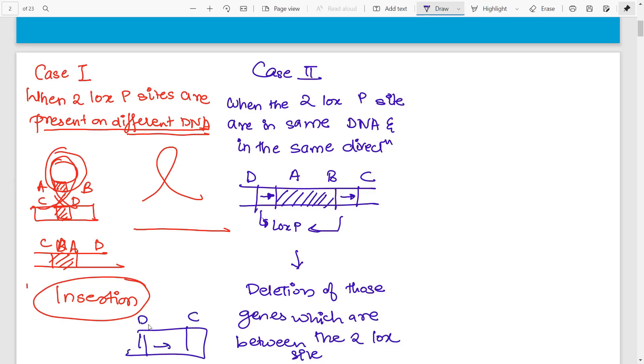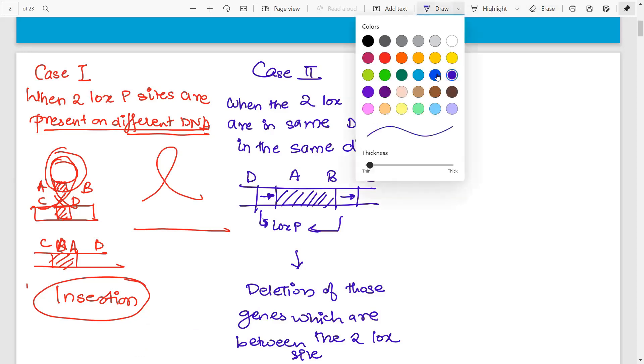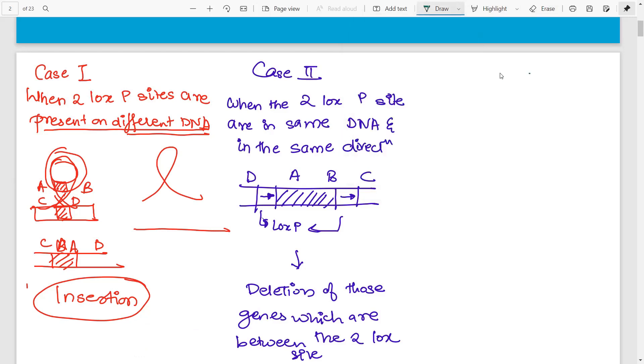Which gene will get deleted here? The A-B gene will be deleted and what will be left is D-C. If the LOXP sites are in the same DNA and the same direction, you will have deletion, and the gene deleted is the one between the two LOXP sites.